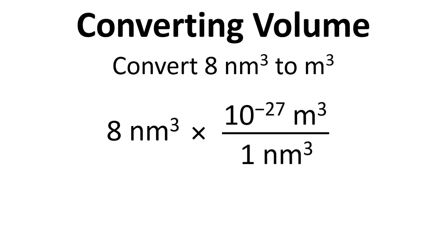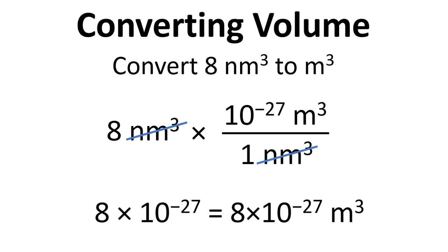That goes to 10 to the minus 27 m³ for every 1 nanometer cubed. Cancel out the nanometers cubed and we get 8 times 10 to the minus 27 m³.